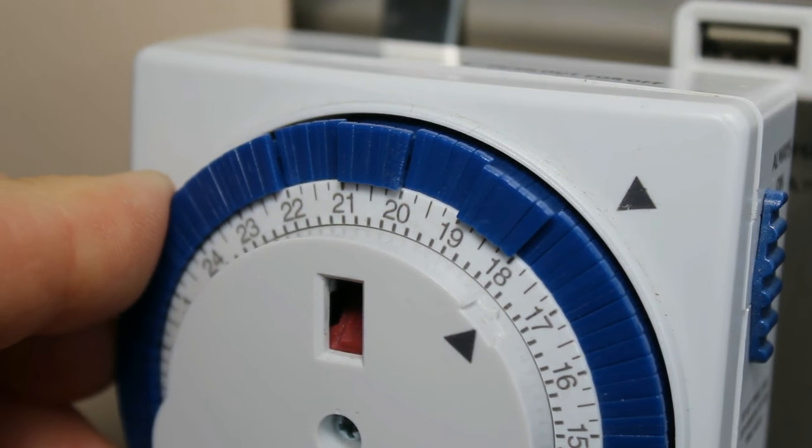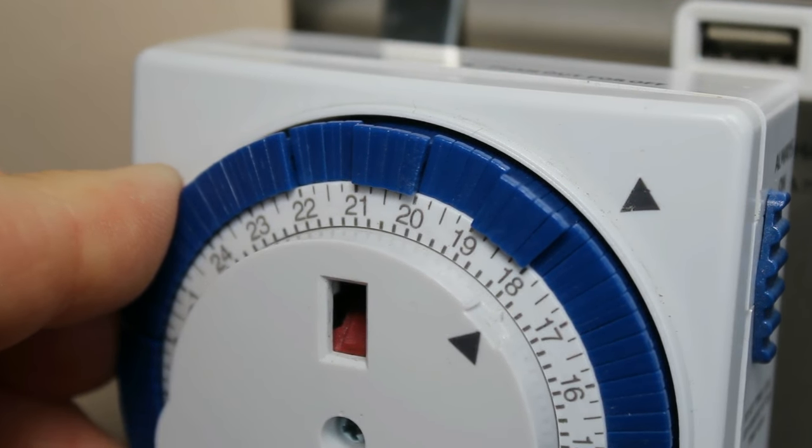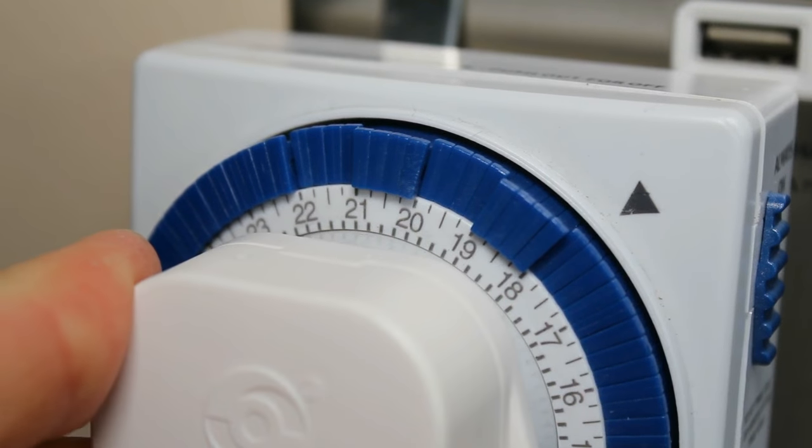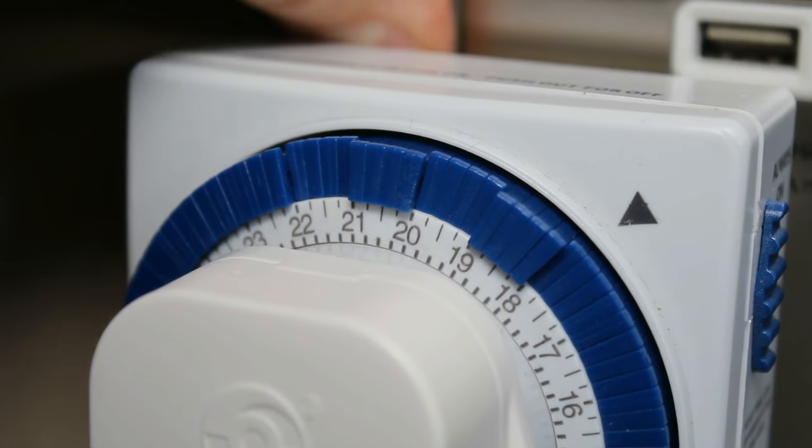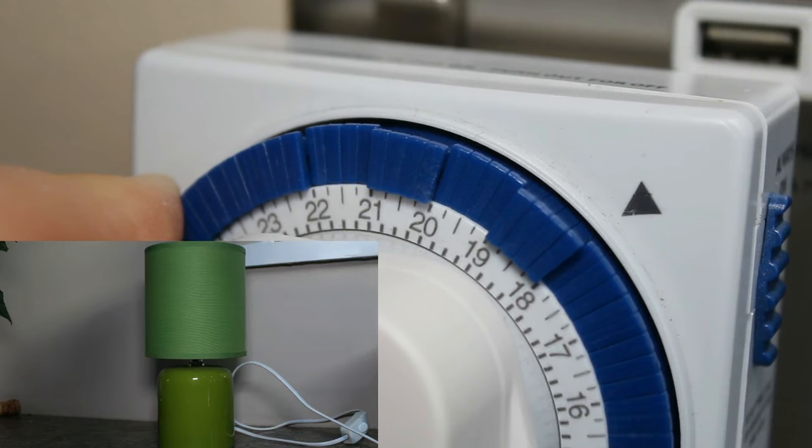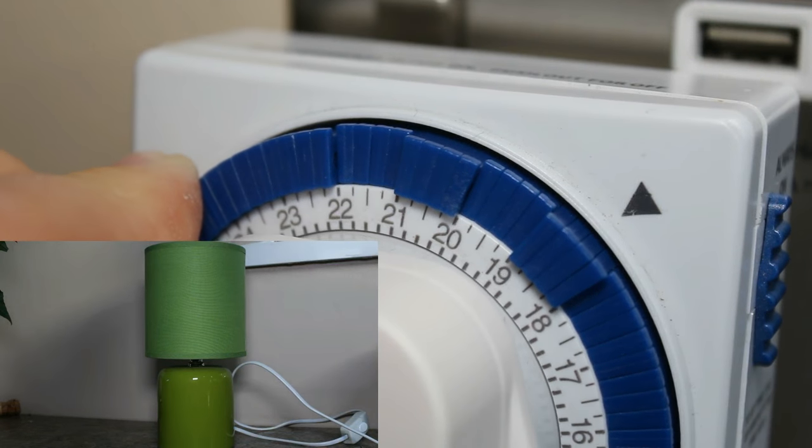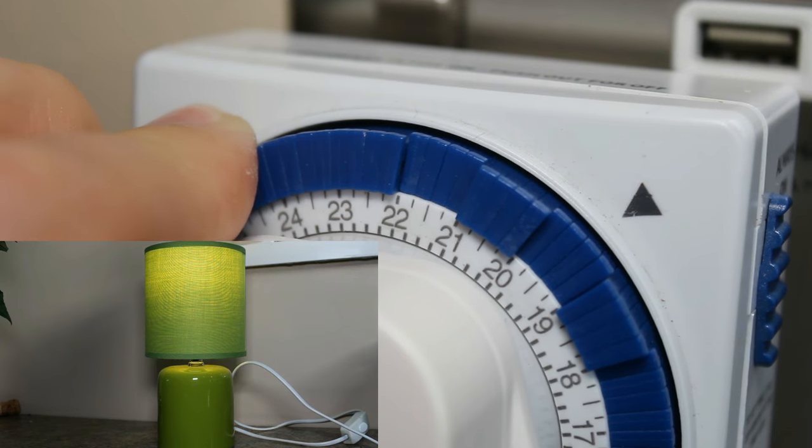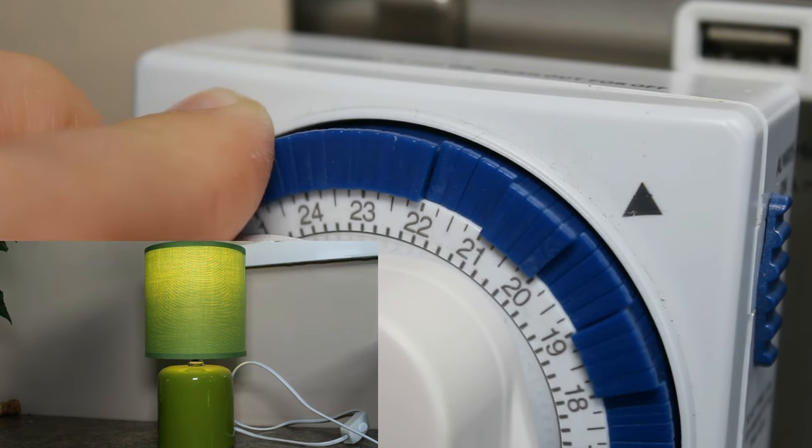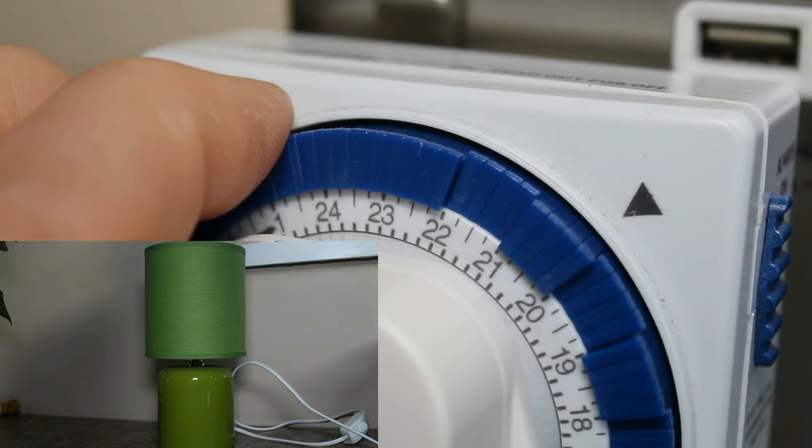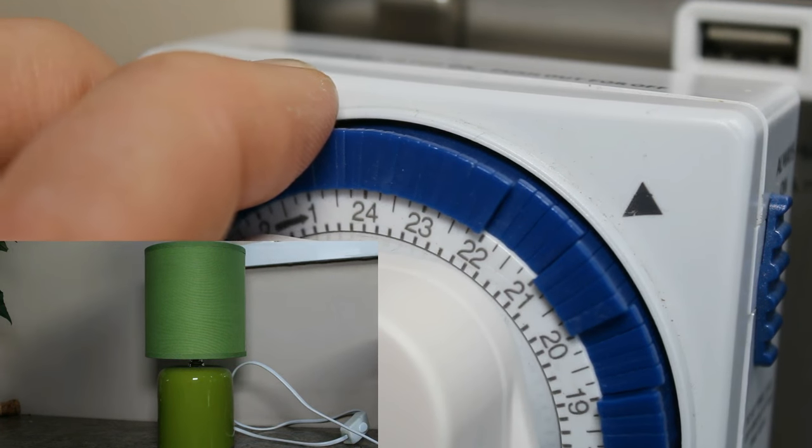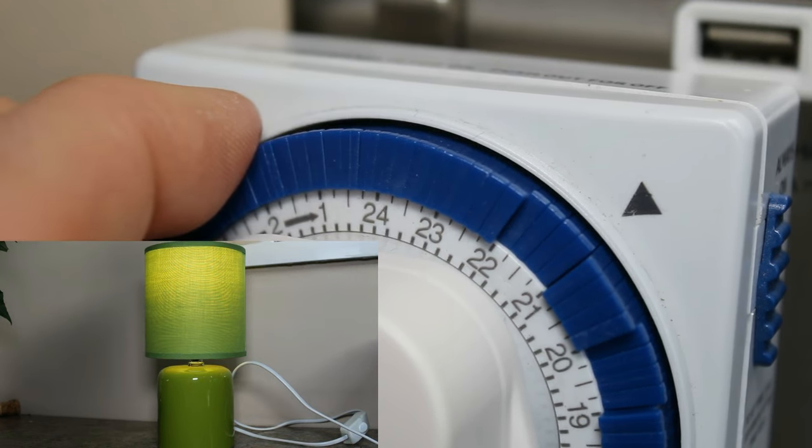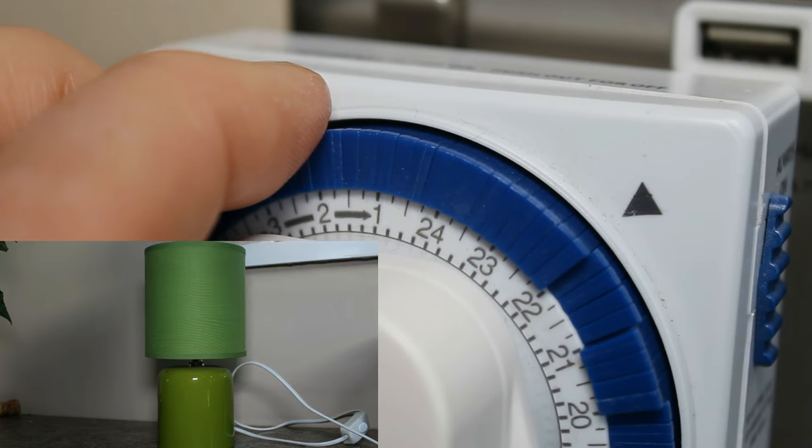I'll just speed up the timer with my hand just to show exactly how it works. So we'll plug the appliance in there, turn the switch on. There we are, it's gone off. And then it comes on again. Obviously I'm speeding this up just to show it for the purpose of the video. And then it goes off again. And then it goes on again. And then it's off all night.